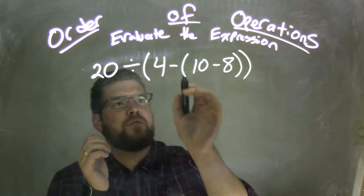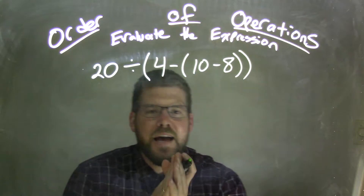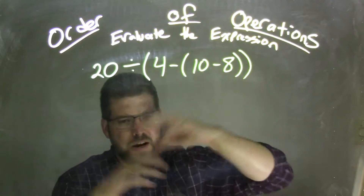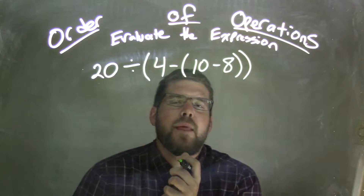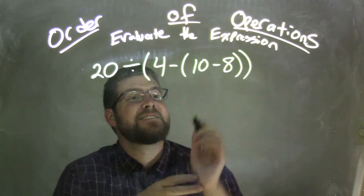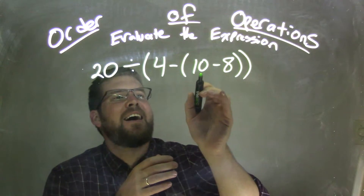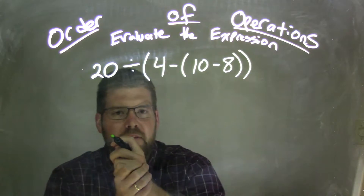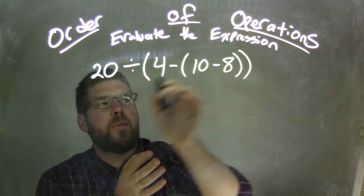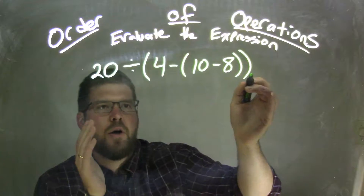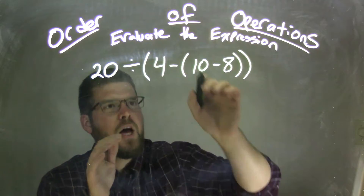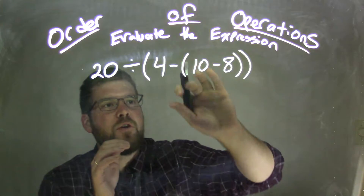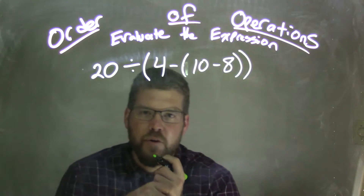Well, we start from the inside, right? Right from this inside part here. I always think of those Russian dolls — you take one off, next one off, next one off, next one off. So, 10 minus 8 comes first inside the most inside parentheses, right? We have division here, but the first set of parentheses on the outside — we need to deal with what's on the inside of that, but then we have another set of parentheses on the inside, so we need to deal with that first. So, 10 minus 8 comes first.